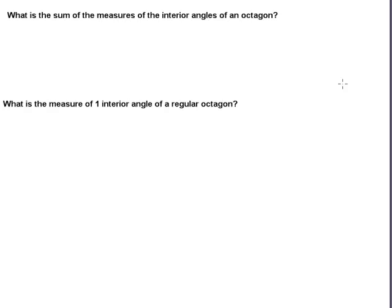How to find the measure of interior angles in convex polygons. By the end of this tutorial you should be able to answer questions like: what is the sum of the measures of the interior angles of an octagon, or what is the measure of one interior angle of a regular octagon? And we should be able to do this for any kind of regular convex polygon.